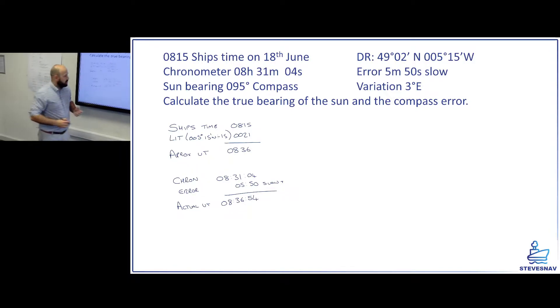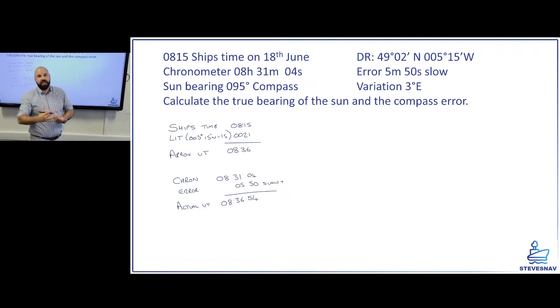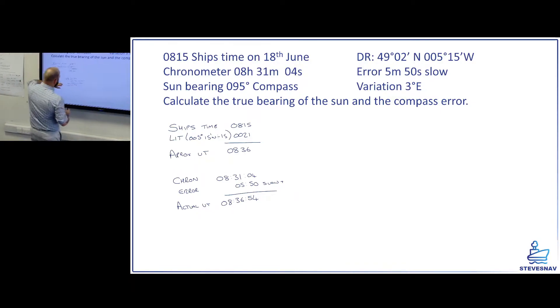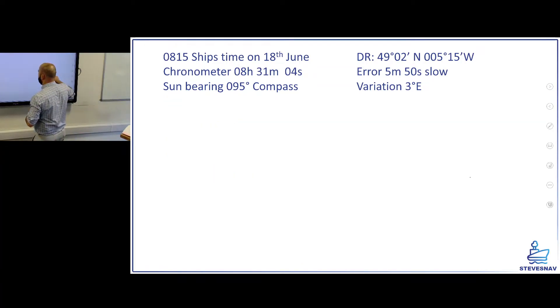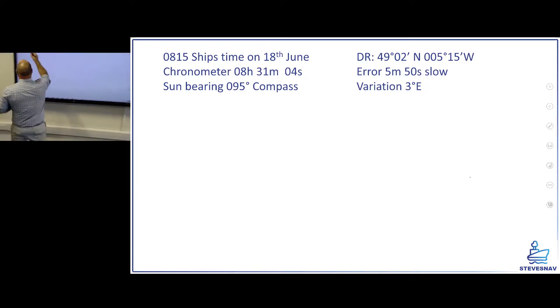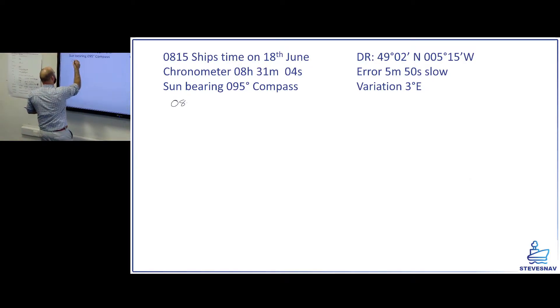If it's slow to catch it up and that will give us the actual UT of 08:36:54. Now we've got a UT time of 08:36:54, we can go into the almanac, get an LHA, well get a GHA to get our LHA and get a declination and then we're ready to proceed with our ABCs. So what we'll do, we'll just write the time on the next page there, 08:36:54. So we've got that to hand.